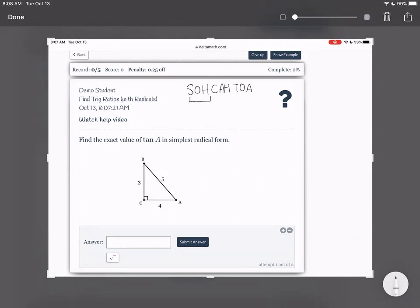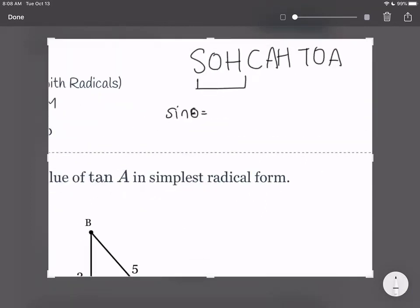The SOH part stands for sine angle is equal to opposite, that's the O over H, hypotenuse. So this is what the SOH in SOHCAHTOA stands for, S for sine, O for opposite, H for hypotenuse. Then the CAH, the C stands for cosine. So cosine of theta is equal to A stands for adjacent, over H, which stands for hypotenuse.